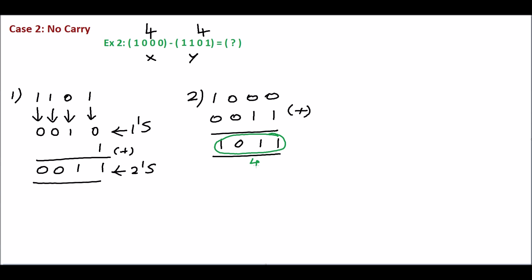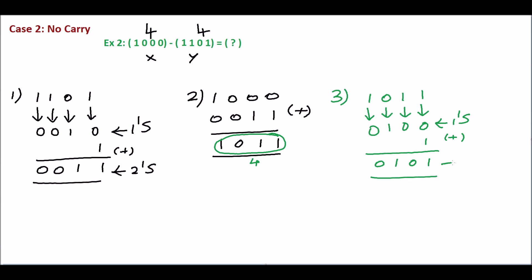If a carry is produced we have to discard the carry, but in this example we are not getting any carry. So take the 2's complement of this sum. The sum is 1, 0, 1, 1. First find the 1's complement, then add 1 with this: 0 plus 1 gives 0, 1, 0. This is the 2's complement. Finally assign a negative sign to this answer.